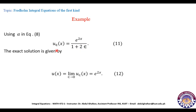As mentioned earlier, the solution u(x) is found by taking epsilon tends to 0. When epsilon tends to 0, u_ε(x) approaches u(x), which equals lim(ε→0) u_ε(x). When epsilon tends to 0, the term 2ε approaches 0, so we get e^(2x)/1, which equals e^(2x). This is the closed-form solution of the Fredholm integral equation of the first kind.